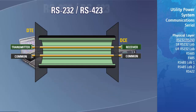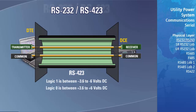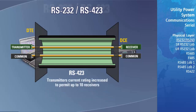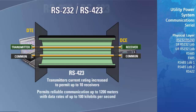The RS-423 standard is similar to the RS-232 but with the following improvements. A logic 1 is between minus 3.6 to 6 volts DC and a logic 0 is between plus 3.6 to 6 volts DC. This reduction in the magnitude of voltage range allows the transmission of data at higher rates. Additionally, the transmitter's current rating has been increased to permit up to 10 receivers, allowing RS-423 to permit reliable communication up to 1,200 meters with data rates of up to 100 kilobits per second.